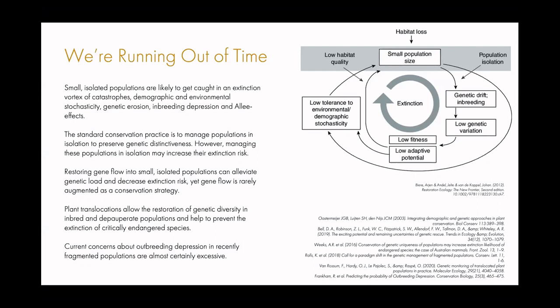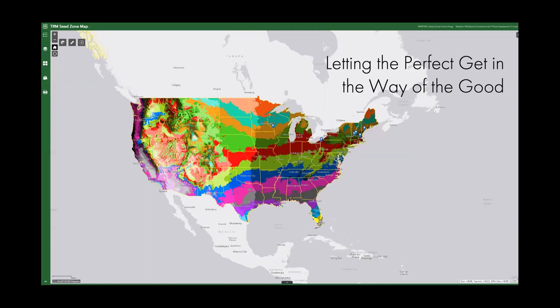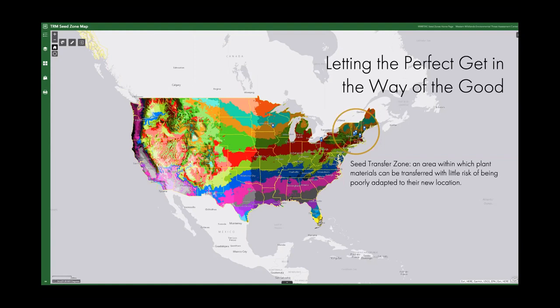We all know that most of these extirpated plant communities were not fragmented 500 years ago — they were quite stable. As Rosemary said to me: don't let the perfect get in the way of the good. We're running out of time; climate change and plant and pollinator extinction are happening now. A seed transfer zone is a concept promoted by the U.S. Forest Service and other agencies — an area within which plant materials can be transferred with little risk of being poorly adapted to their new location. This map is a color-differentiated map of the different seed transfer zones in the continental United States.